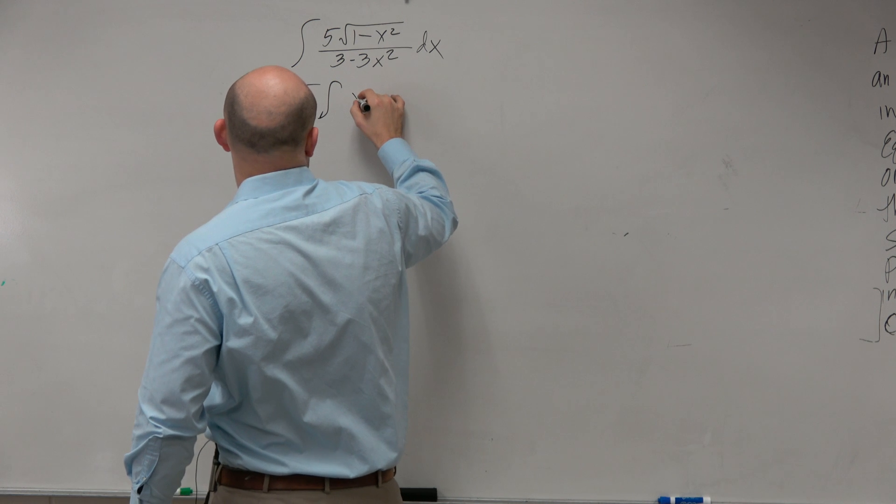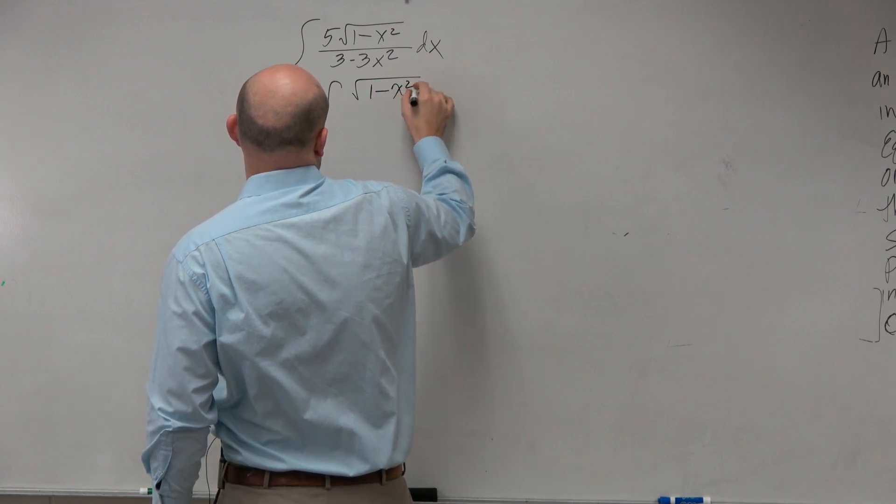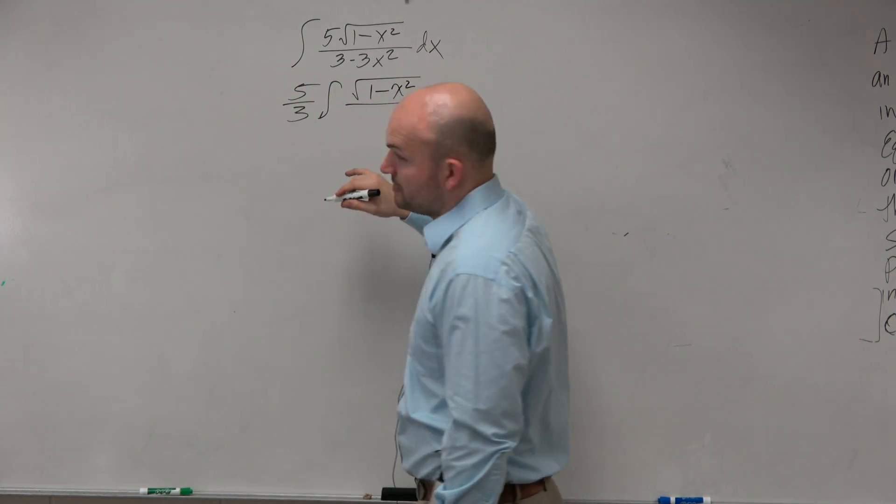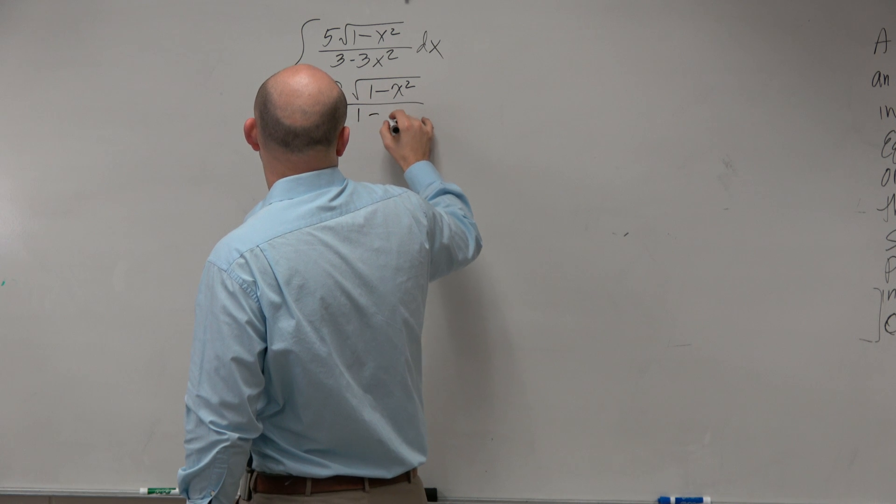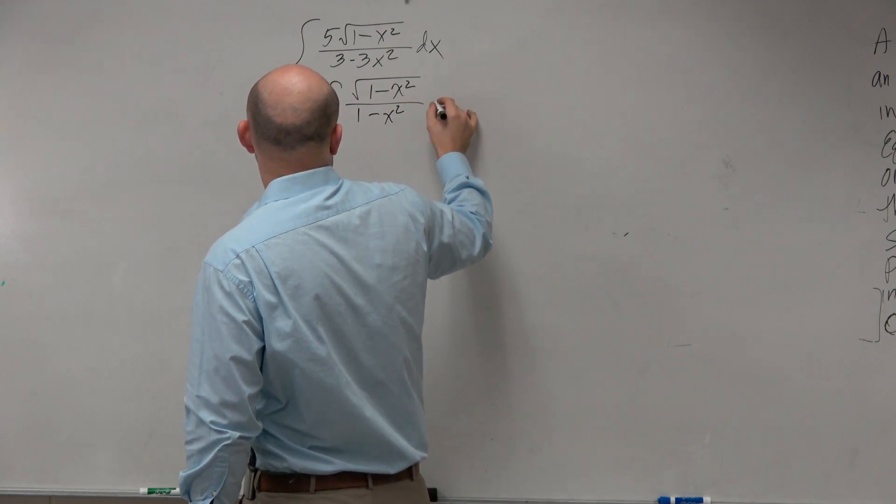I'm going to factor out a 5 out front, so I'm going to be left with 1 minus x squared. And I'm going to factor out a 3 in the denominator, which will leave me with 1 minus x squared.